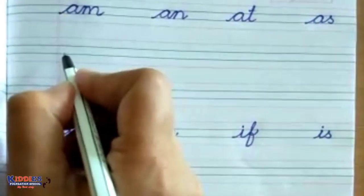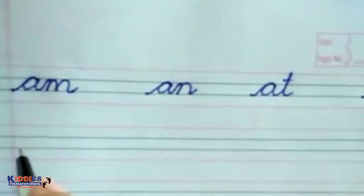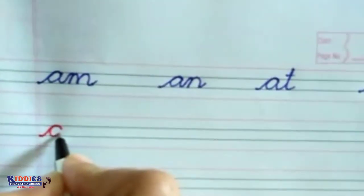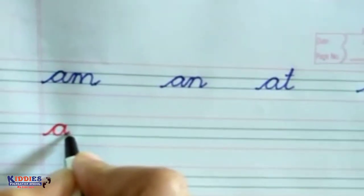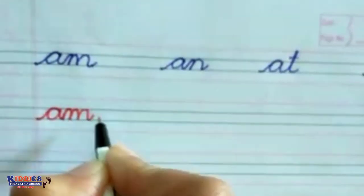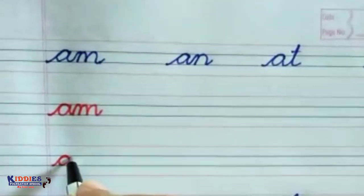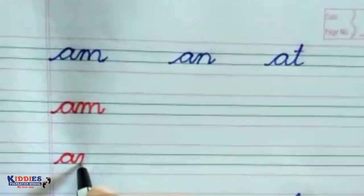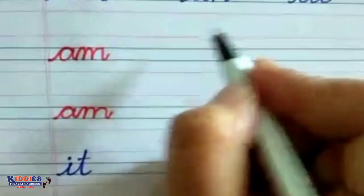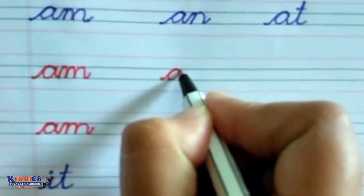Let's see how to write 'am'. First we will write the letter 'a' like this, then up and down like this. Then let's write 'an' — write 'a' then 'n'.